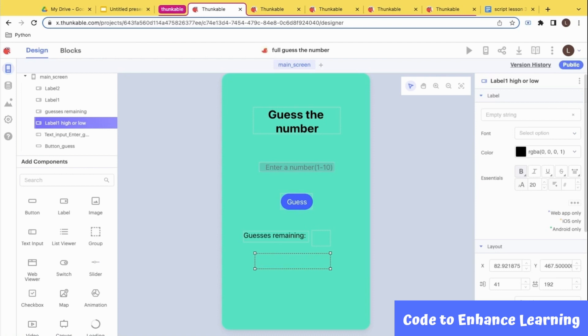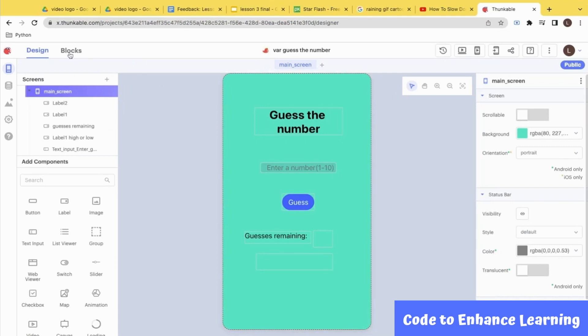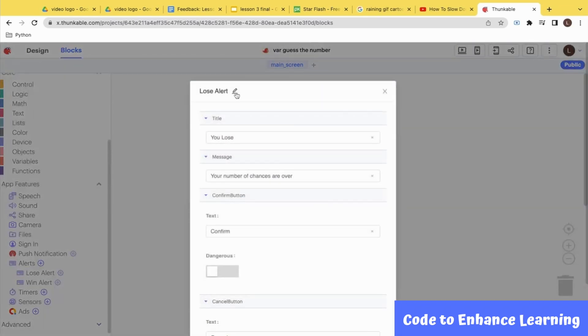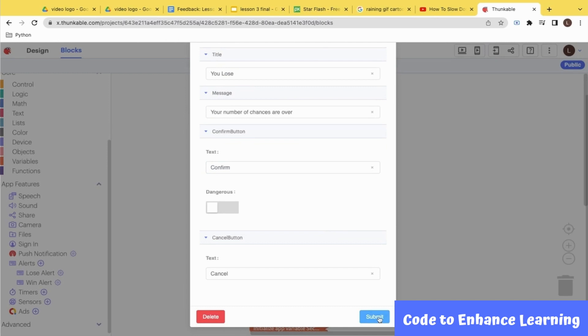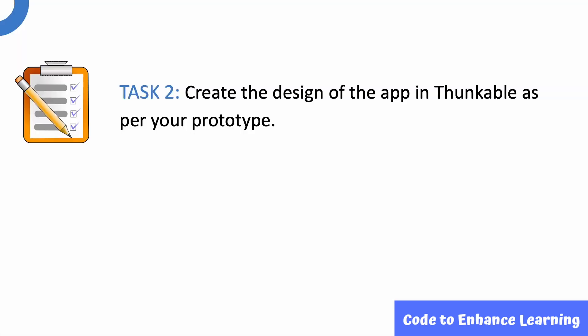Apart from these, we will also be adding one more new component which is the alert component in this app. Alerts are useful components for displaying important messages while users are in the app. We can find the alert component under app features which is in the blocks panel. Let us see how to create alerts. I will switch to the blocks tab and under app features, you will see alerts. I am going to click on this plus and I will see a new alert opening. I am going to rename this alert and call it Lose Alert. I can give it a title and I can also give it a message. And then I can submit it. Similar to the Lose Alert, I have created one more alert which is the Win Alert. With this, it brings us to our Task 2: Create the design of the app in Thunkable as per your prototype.